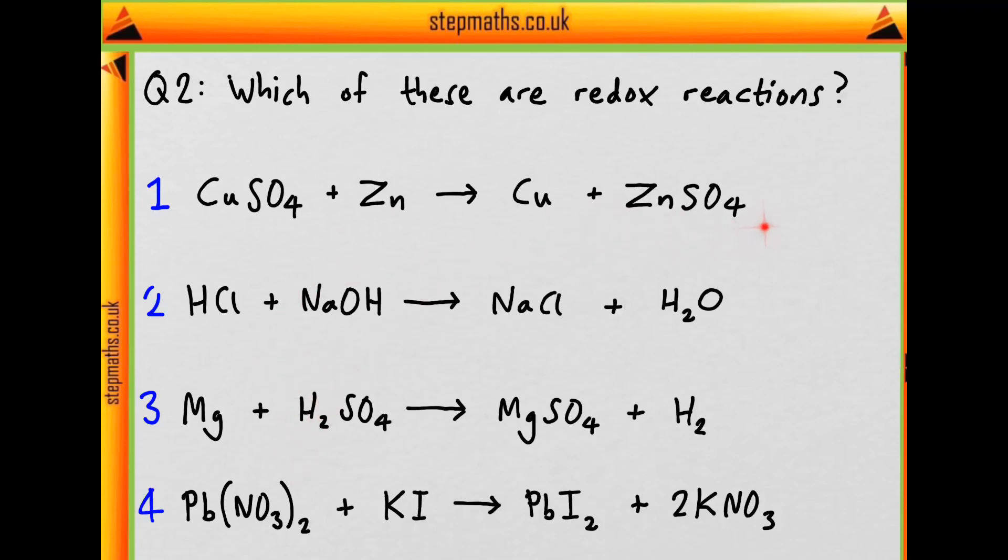How do we work out oxidation states? We use a set of rules which we need to remember. And what are these? So firstly, any element by itself is zero oxidation state. So we have zinc, copper, magnesium and hydrogen, which are all zero.